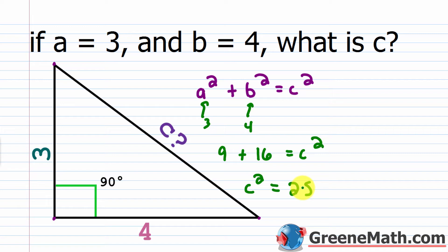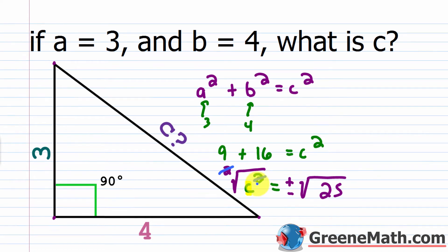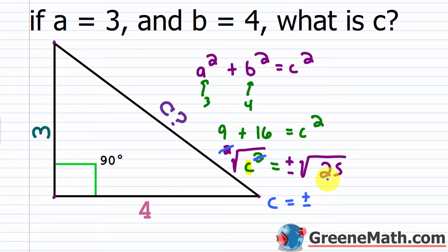To isolate c, since it's being squared, I take the square root of each side. The index of 2 on the square root cancels with the exponent of 2, giving me c by itself. So c equals plus or minus the square root of 25, which is 5. Remember: c could be 5 because 5 squared is 25, or negative 5 because negative 5 squared is also 25 — that's why you have the plus or minus.